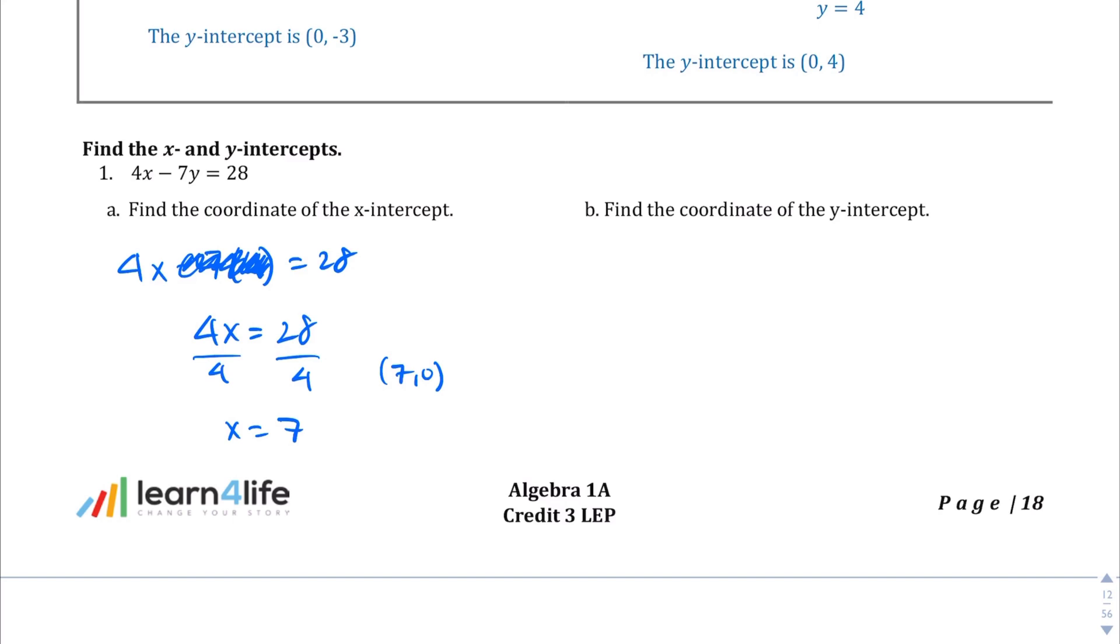And the coordinate of the y-intercept, we're going to plug 0 in for x. 4 times 0 minus 7y equals 28. Go ahead and solve for y. That will go away. Negative 7y equals 28. Divide both sides by negative 7. We should get y equals negative 4. And so the point, the coordinate of that y-intercept, is going to be 0 comma negative 4.